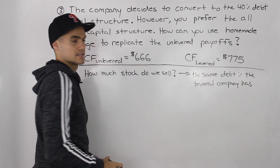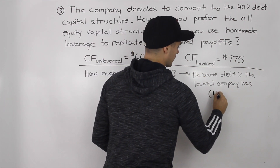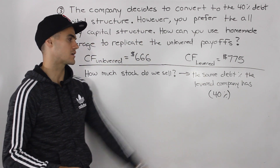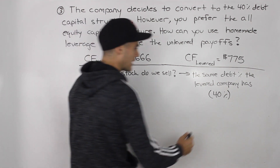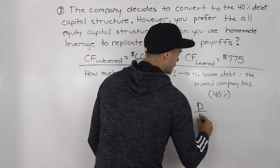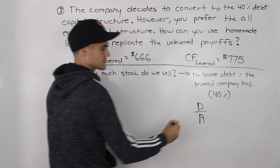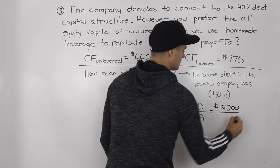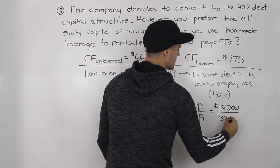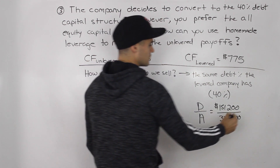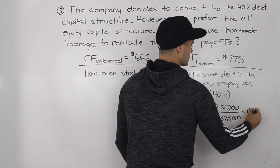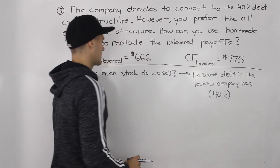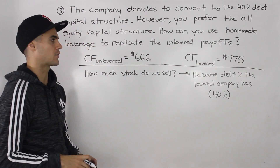In this scenario, that percentage is 40%. Sometimes you'll have to calculate it by taking the debt over the firm value or over the assets. The debt of the levered firm was $151,200 and the assets were $378,000. When you divide those, you get 0.4 — 40%. So we have to sell 40% of our stock.